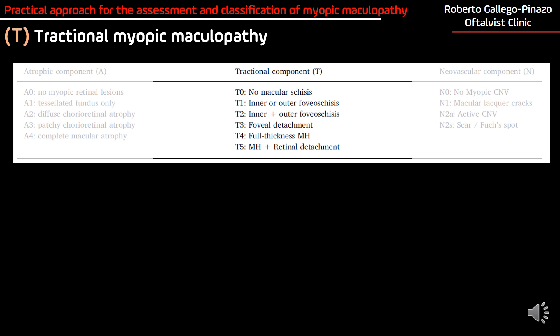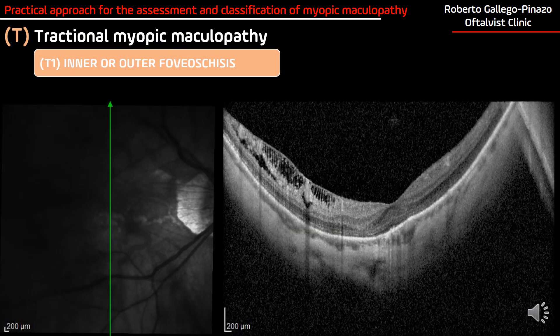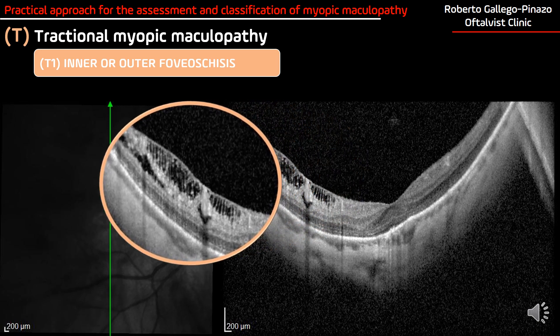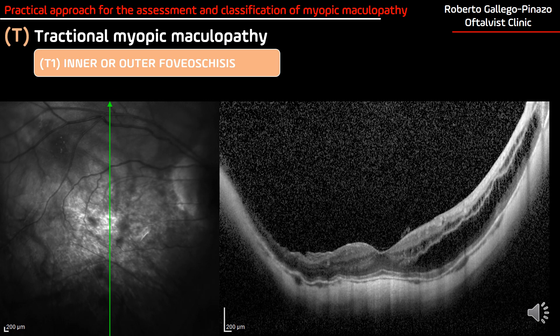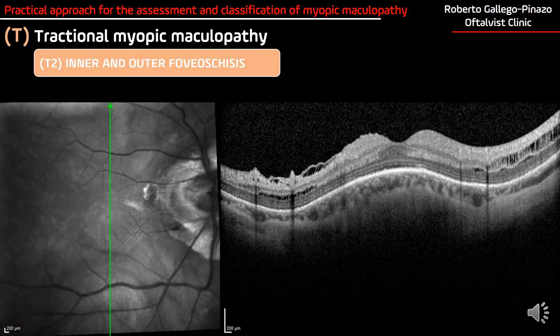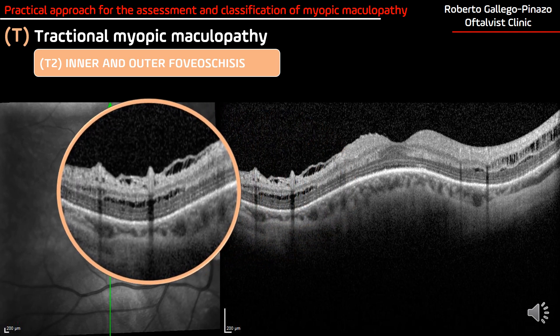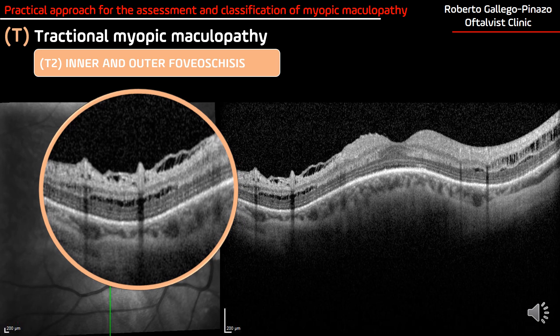Second, we have the tractional component of the myopic maculopathy. T0 is when there is no schisis. T1 is when we find inner foveal schisis, and we may also find only outer foveal schisis involving the outer retinal layers, particularly the outer nuclear layer. They may also be coincident, and then we talk about T2 stage — inner and outer foveal schisis. We can see a protrusion of a vessel, inner foveal schisis, and also schisis involving the inner retina.